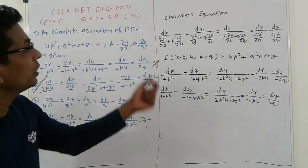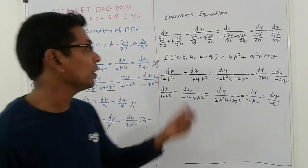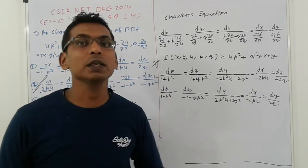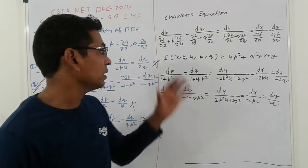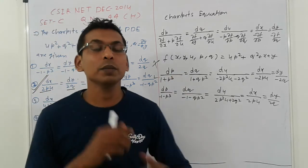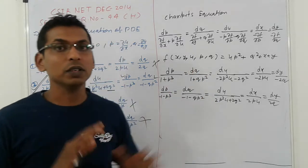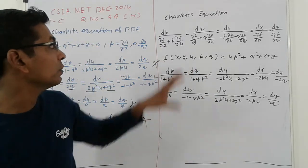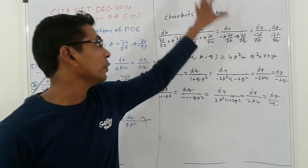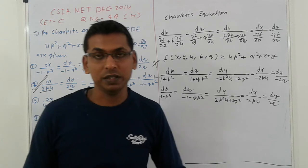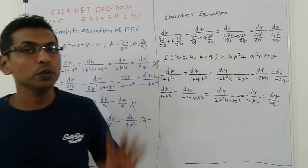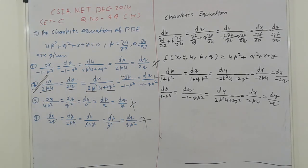The second option is correct because option one is wrong. So these are simple and easy problems using Charpit's equations. Practice both types of problems, and your concept will be clear. Must remember the Charpit equations. Thank you, bye bye.